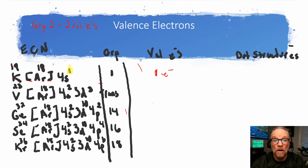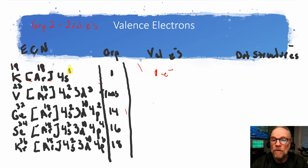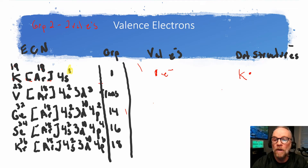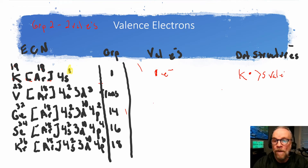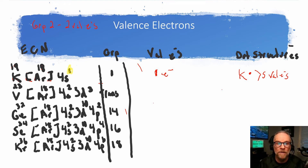With the dot structure, we write the potassium symbol and place one dot to the right of it. These are the s valence electrons that we put right to the right of the symbol of the element.